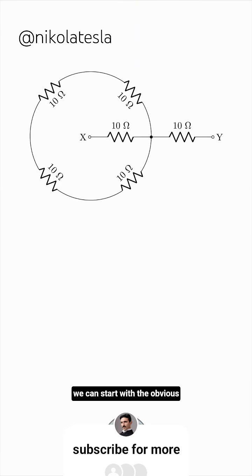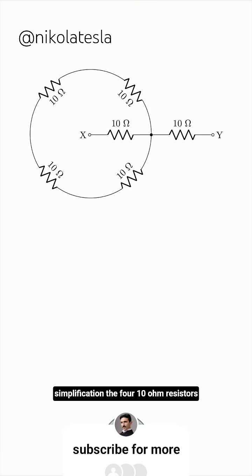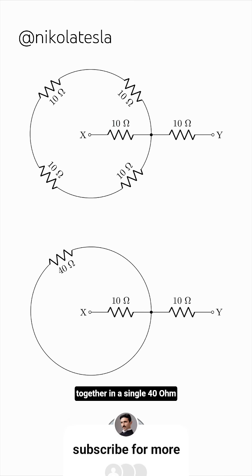We can start with the obvious simplification. The four 10-ohm resistors in the circular path are in series, so we can lump them together in a single 40-ohm resistor.